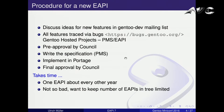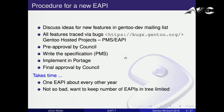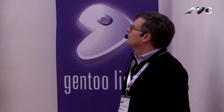To have a new eAPI, it starts with discussing ideas in the dev mailing lists. We track all the features via bugs, and at some point we collect a set of features and get pre-approval by council, then work on the specific ones. Then it's time to write a specification and implement it in Portage, and after all that is done, we get final approval by council. It takes time — about one new eAPI every other year.